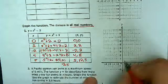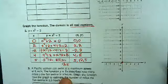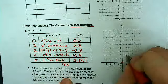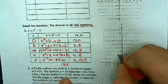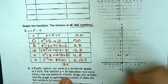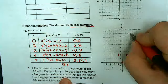Now, my graph - here's (0, 0). (2, 2) would be right here. Negative 2, 2 is right here. 4, 8, so (4, 8) is here.